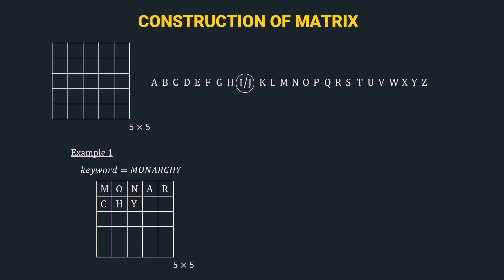Now we strike out all the letters already filled from the alphabet set — M, O, N, A, R, C, H, Y. The next step is to input all the remaining alphabets in alphabetical order: B, D, E, F, G, I/J together, K, L, P, Q, S, T, U, V, W, X, and Z. We have successfully constructed the 5x5 matrix.